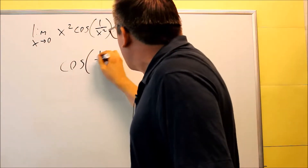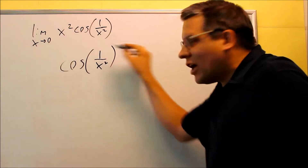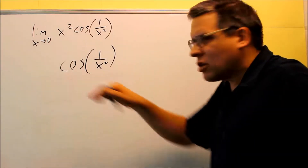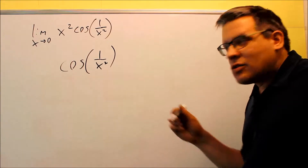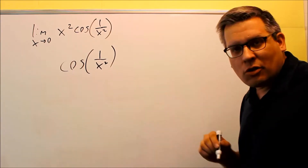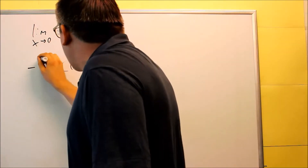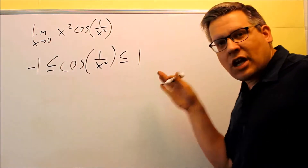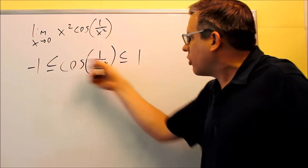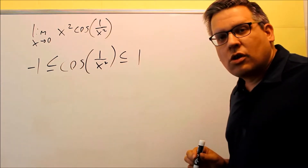We have cosine of one over x squared. In trig, you learned that cosine of any angle always gives a number between negative one and one. The reason is that cosine comes from the unit circle — since cosine is an x-value on the unit circle, the biggest it can be is one and the smallest is negative one. So we can say that negative one is less than or equal to cosine of one over x squared, which is less than or equal to one. We include both endpoints because cosine could equal exactly negative one or exactly one.